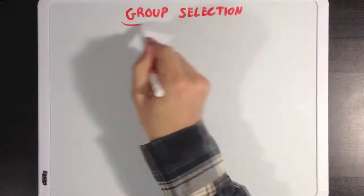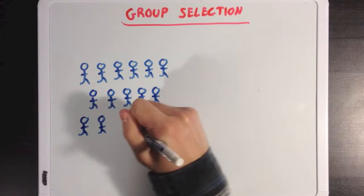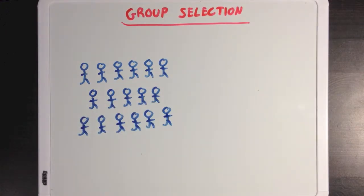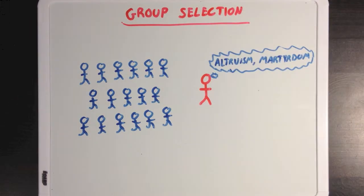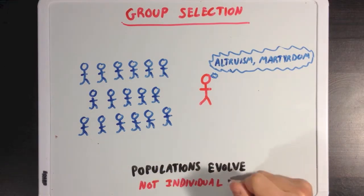And this is the idea that genetic traits that benefit the population or group as a whole will still be selected for even if they don't directly increase the fitness of the individual with the trait. Words like altruism and martyrdom come to mind. And traits that relate to these ideas are what we're talking about when we think of group selection. And these traits can still be selected for because entire populations evolve, not just individual members.